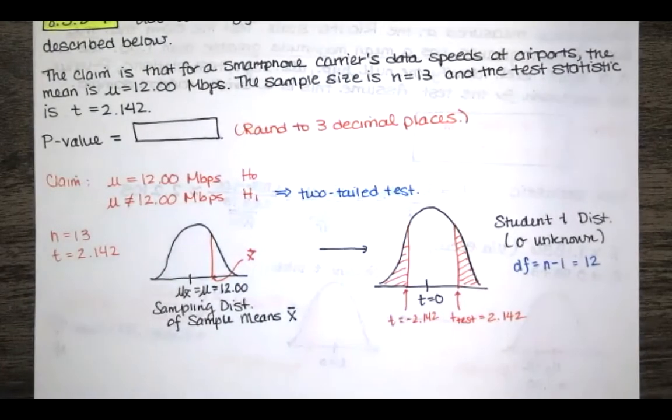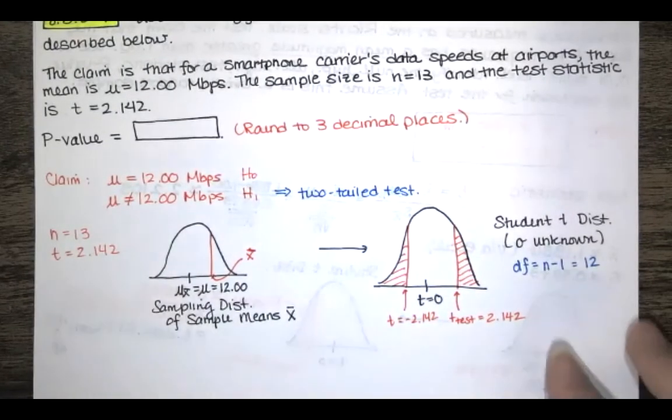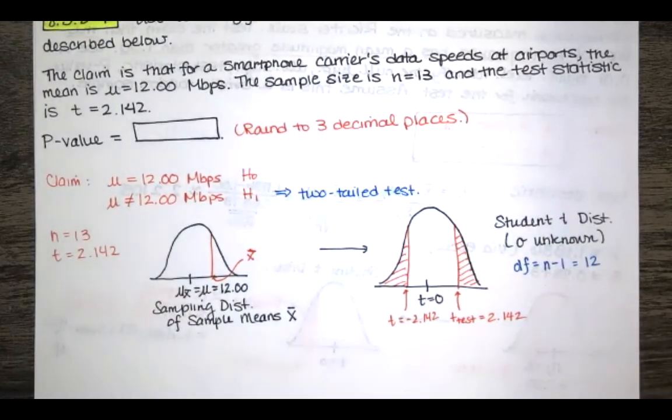So I want the area in the tails but I don't have a table of these values because we'd have to have a different table. You remember that two-page table that we have for positive z-scores and negative z-scores? We'd have to have a different table for every value of n. That's difficult to do. So typically we use technology to find these areas and I'm going to show you how to use excel to do that.